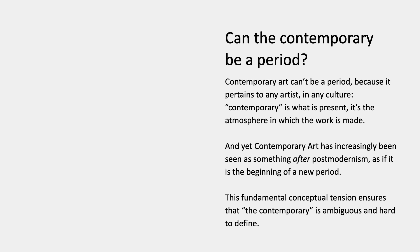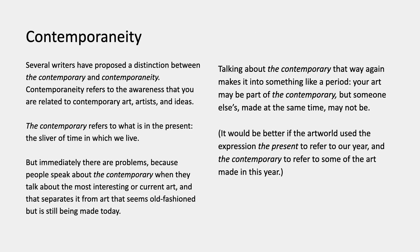All the many institutions with the word contemporary in their names — contemporary art museums — are evidence of this idea that they represent something that's after postmodernism. So there's a fundamental conceptual tension between the contemporary in its literal, nominal sense as the present and also contemporary as an aspirational period, something that might become a period. A couple of writers have proposed a distinction between the contemporary and contemporaneity, which would refer to the awareness that you're related to contemporary art, artists, and ideas. So that's a useful word, even if it's a bit polysyllabic.